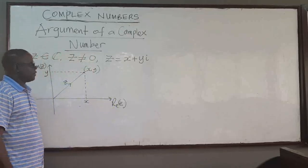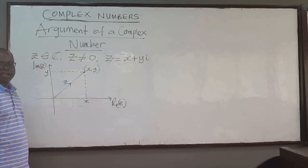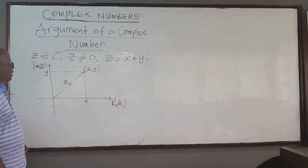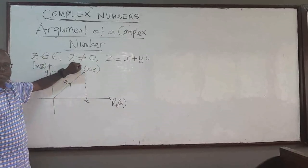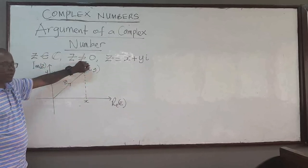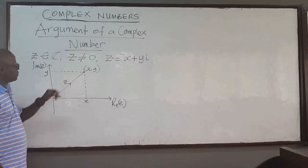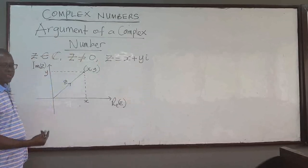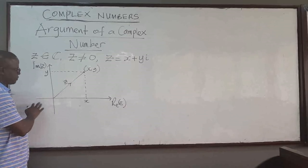Welcome to this lecture. Once you look at the argument of a complex number, given a complex number z — and suppose that z is not zero — if z is zero we can't really talk about the argument of the complex number. So z must be non-zero. You let z equal x plus iy. We've seen that you can represent it as a vector on a diagram.